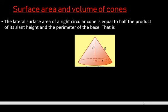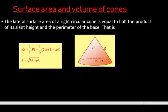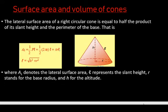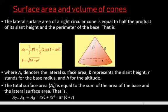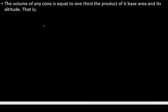To find the total surface area, we consider the sum of the area of the base and the lateral surface area. Using the formula one-half times perimeter of base times slant height, this simplifies to π × radius × slant height. This is the lateral surface area of any right circular cone. The total surface area is the sum of the base area and the lateral surface area.